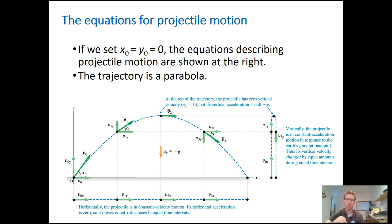If we're ignoring air resistance, its acceleration in the x direction will be 0. Later in the semester we'll add in acceleration due to air resistance, but for now let's assume it's essentially 0 or small enough to ignore. An object in projectile motion — thrown, launched, or otherwise given some initial velocity — will move at some angle, and its y component of velocity will decrease on the way up.